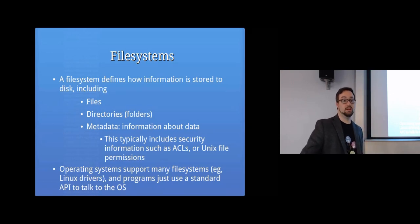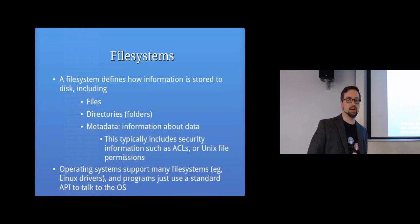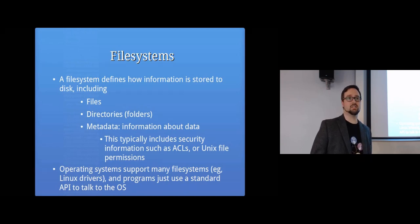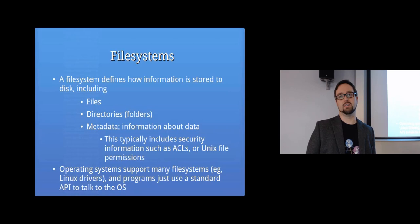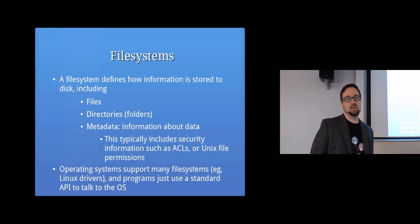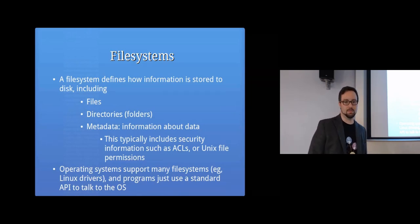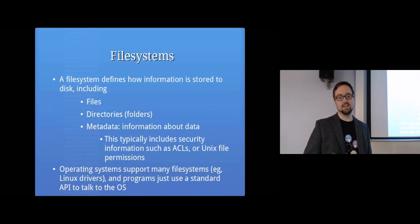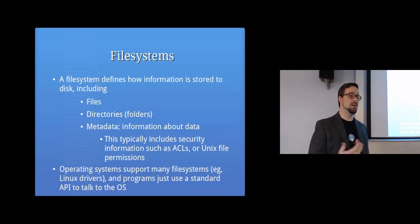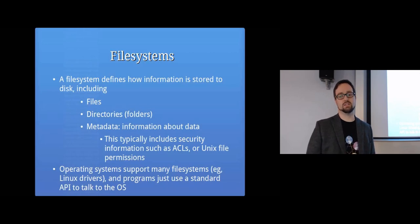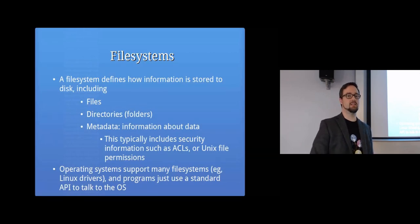Today I'm mostly going to be talking about file permissions, and as our example we're going to look at how Unix file permissions work. A file system is the way of organizing information on the hard disk or whatever storage medium we've got, and it dictates how things are stored. You've got things like files and directories — or folders as Windows calls them — and each of those files has some metadata associated with it.